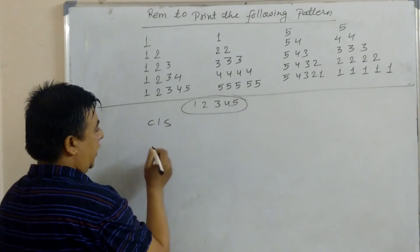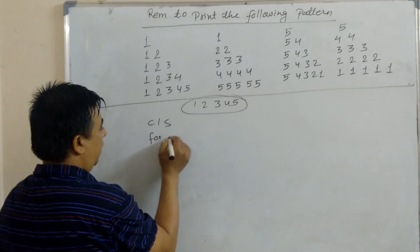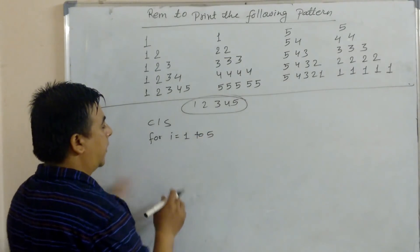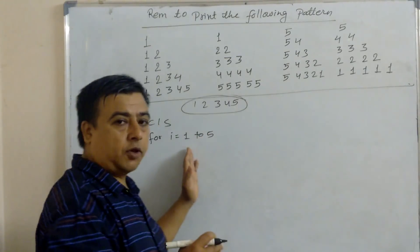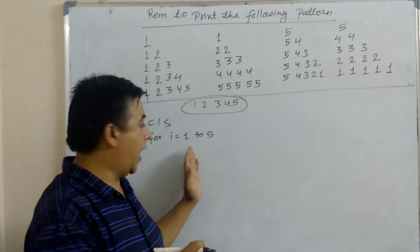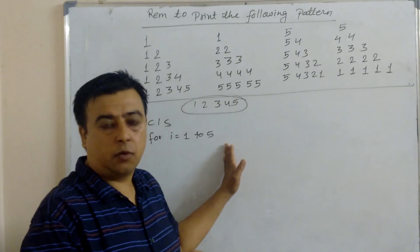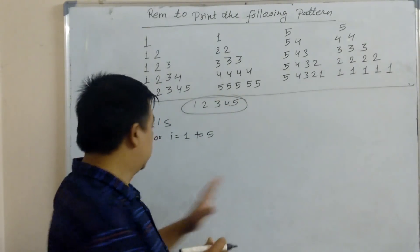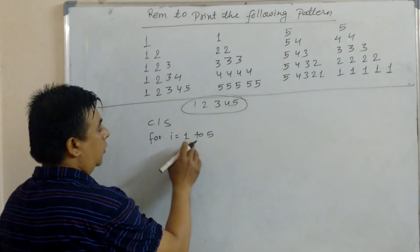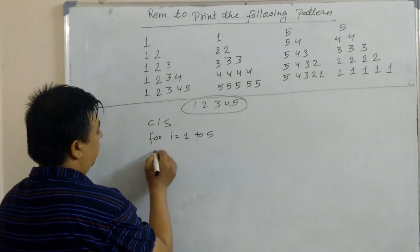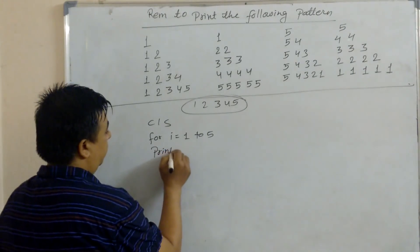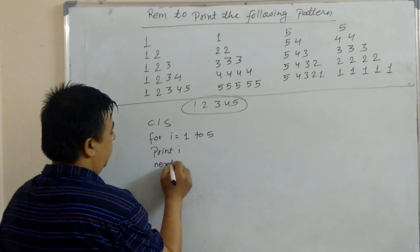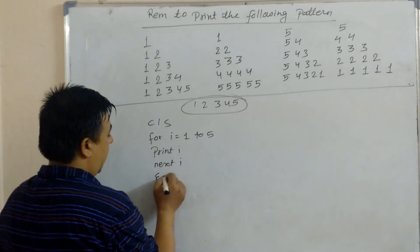CLS — clear screen. For I equal to 1 to 5, because we have to start from 1 and end up to 5. We have to print 1, 2, 3, 4, 5. So, FOR I = 1 TO 5. Then PRINT I. Then NEXT I, and END.